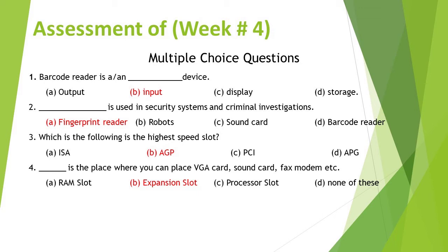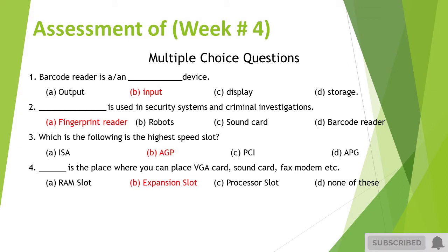Which is the highest speed slot? Options are: ISA, AGP, PCI, or APG. Dash is the place where you can place a graphics card, sound card, fax modem, etc. Options are: RAM slot, expansion slot, processor slot, or none of these.